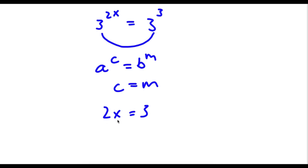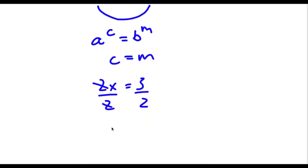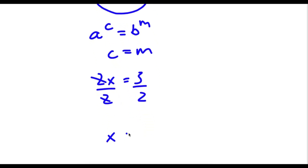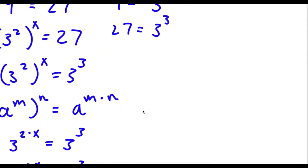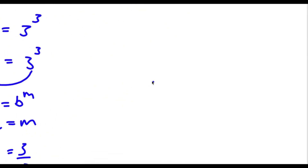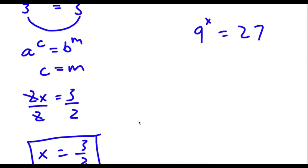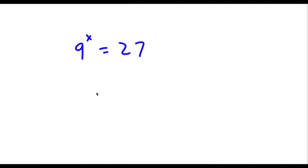Now to solve this, simply divide both sides by 2. These two cancel out and I'm left with x is equal to 3 over 2. Alright, so now to check — our original equation was 9 to the power of x is equal to 27, and now x is 3 over 2. So I have 9 to the power of 3 over 2 is equal to 27.